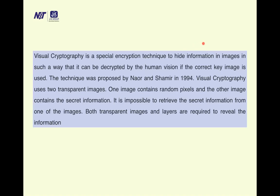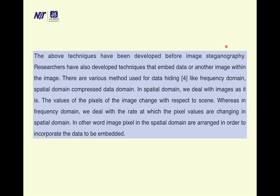Visual cryptography is a special encryption technique to hide information in images in such a way that it can be decrypted by human vision if the correct key image is used. The technique was proposed by Naor and Shamir in 1994. Visual cryptography uses two transparent images: one image contains random pixels and the other contains secret information. It is impossible to retrieve the secret information from one image alone — both transparent image layers are required to reveal the information.